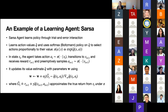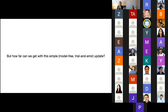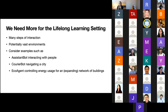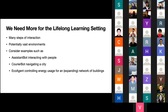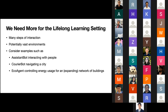That's my brief introduction to reinforcement learning. Now we move to the slightly more complex setting and ask how far we can get with these simpler model-free trial-and-error algorithms. My pitch is that we're going to need more if we want to move to what I call the lifelong learning setting — still a reinforcement learning setting, but now characterized by many steps of interaction and potentially vast environments. Examples include an assistant agent helping many people, a courier robot navigating a city, or an eco-agent controlling energy usage for a growing network of buildings.